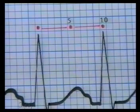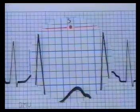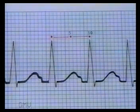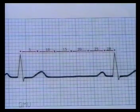In this ECG, the RR interval measures 10 small squares. So the rate is 1500 divided by 10, equal to 150 per minute. A rate above 100 per minute is termed tachycardia.